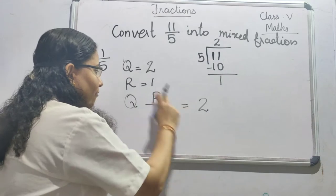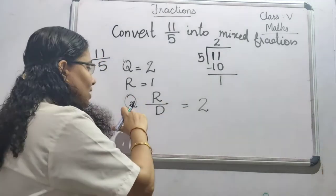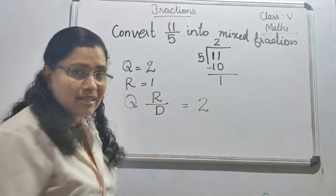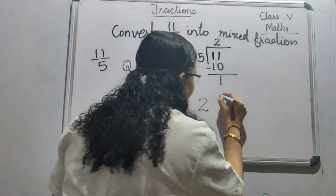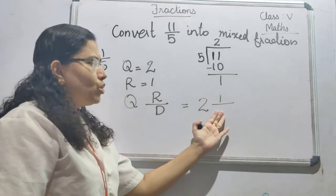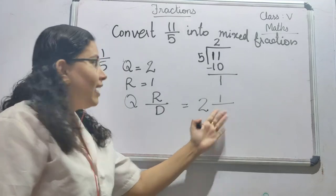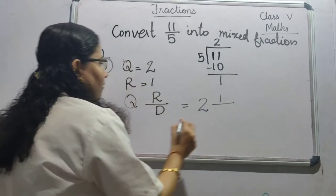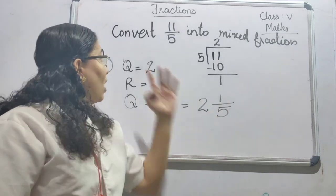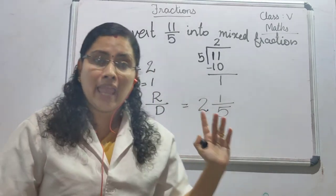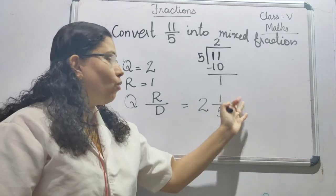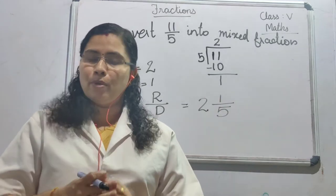So we write it in the form of Q R D. Q is the quotient, that is 2, written as the whole number part. Then R is the remainder — here the remainder is 1, which has to be written as the numerator of the proper fraction. And the denominator is the divisor, that is 5. So when we convert 11/5 into a mixed fraction, we get 2 and 1/5, where 2 is the whole number part and 1/5 is the proper fraction part.